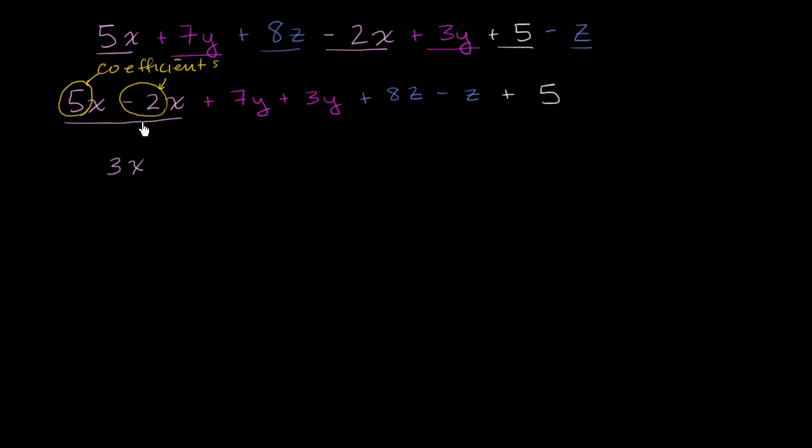But I really want to emphasize that there's a very common sense intuition here. If you have 5 of something, you take away 2 of that something, you are left with 3 of that something. And you have to be very careful.